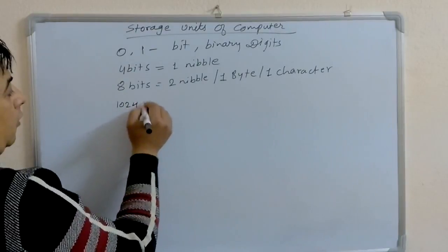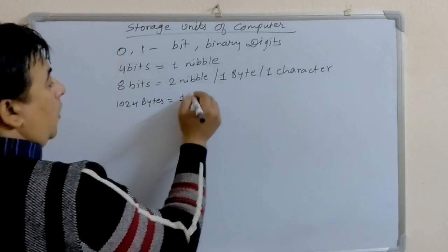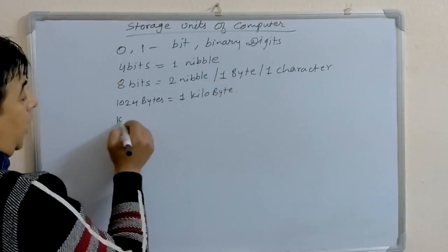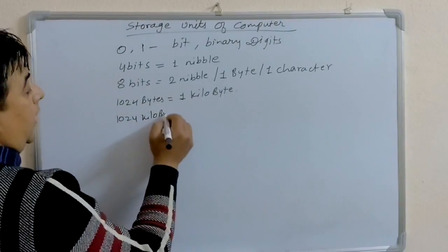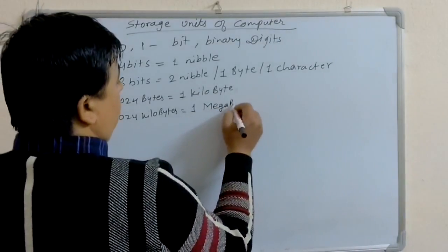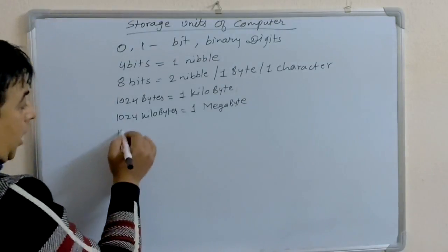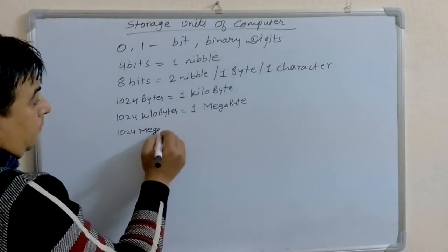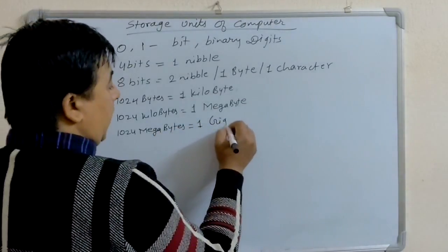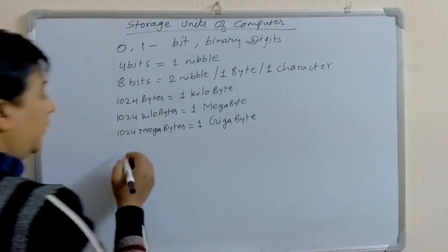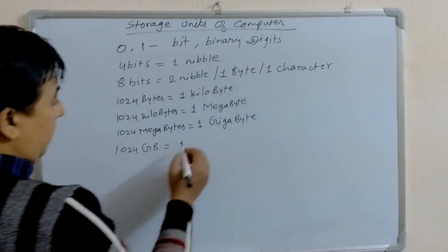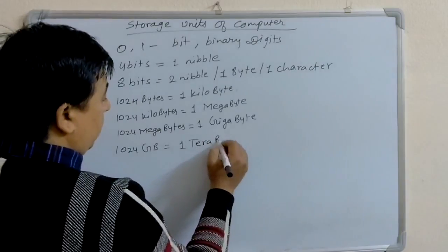1024 bytes is equal to 1 kilobyte. 1024 kilobytes is equal to 1 megabyte. 1024 megabytes is equal to 1 gigabyte.